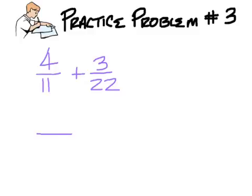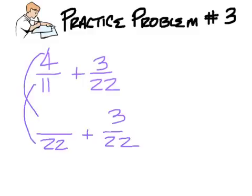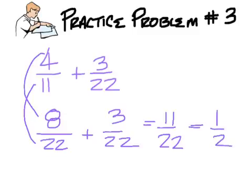Practice number three. Four over eleven plus three over twenty-two. The solution is the denominator is twenty-two so this stays the same. You're multiplying by two which is why we get an eight. Eleven over twenty-two is the same thing as one over two.